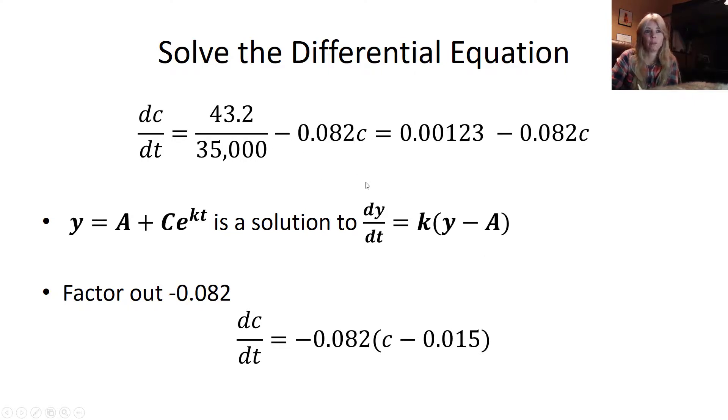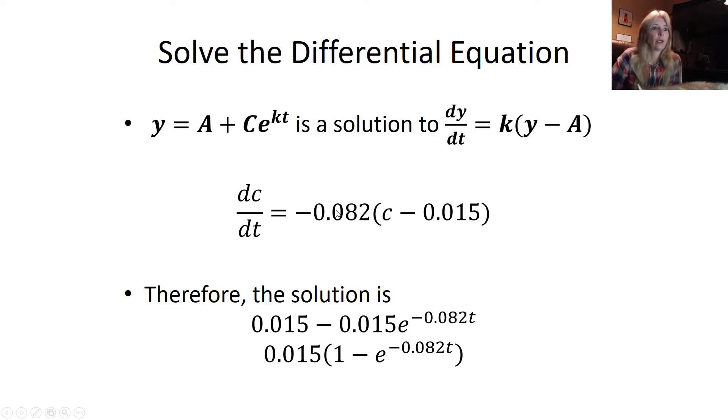How do I put it in the actual form, k times y minus a? Well, I have to figure out my k. It's the negative 0.082, so I'm going to divide every term by negative 0.082. I'm factoring that out front. If you put that in your calculator, 43.2 divided by 35,000, and then divide by negative 0.082, that's where I'm getting 0.015. By factoring this out, this is in my differential equation form, my k and then my function minus a.